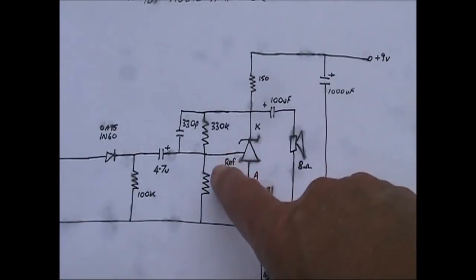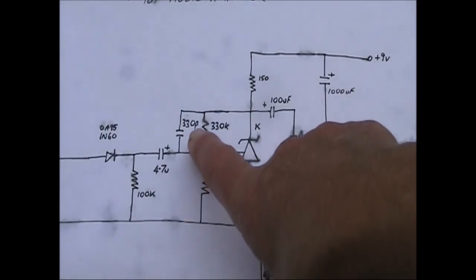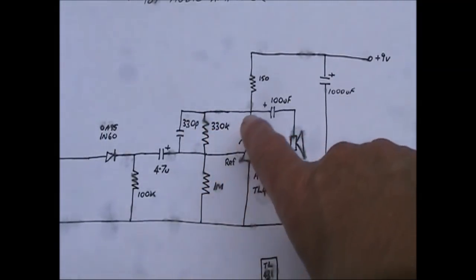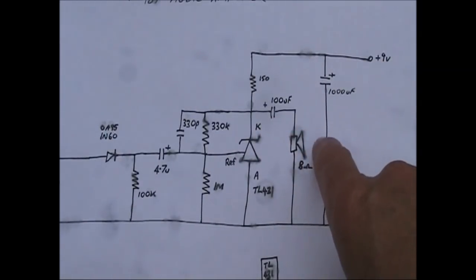Anyway, here's a voltage divider, which puts a bias voltage onto the reference. In parallel is a 330 picofarad capacitor. And coupling the output from the cathode to the speaker, which I used 8 ohms, is a 100 microfarad capacitor.